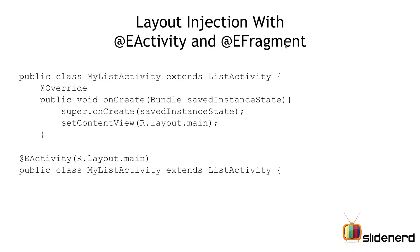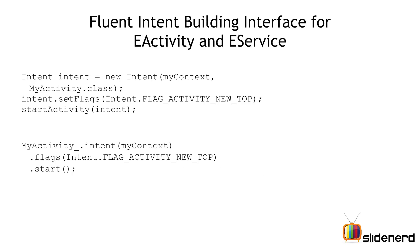That works with fragments as well — there's an @EFragment tag which can be used in a similar way. If you want to start an activity whose name is MyActivity.java, this is how you would write an intent normally. But remember, if MyActivity.java uses the @EActivity annotation, Android Annotations will generate a separate file called MyActivity_.java. That's the file you'll refer to in the manifest and in intents. You can say new Intent(MyActivity_.class) or use the simpler AA method: MyActivity_.intent().start().